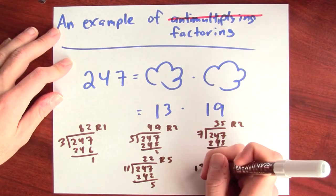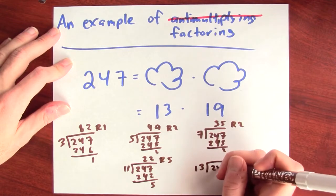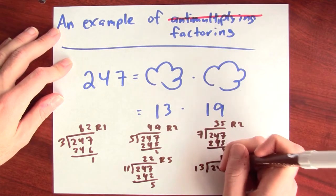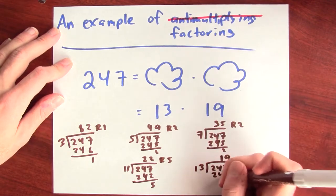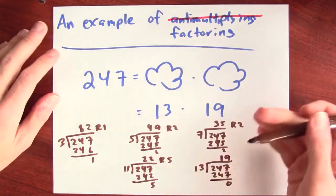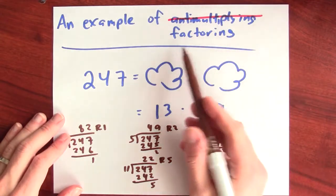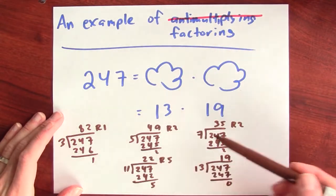And then finally I get to 13. Does 13 go into 247? Yes, 13 goes into this thing 19 times. And that's exactly what I'm looking for. But the easy way here to anti-multiply or to factor is just to try a bunch of stuff, and hopefully you'll land on a product of numbers that multiplies to your given number.